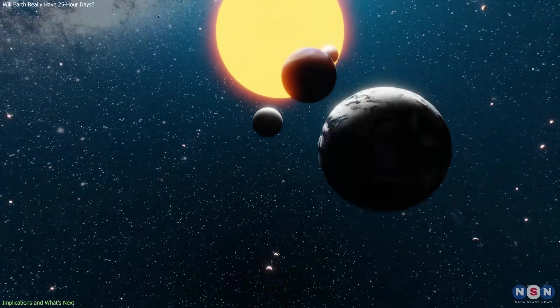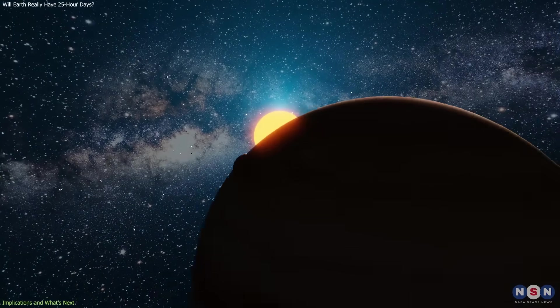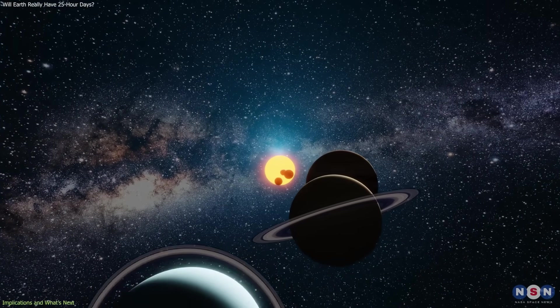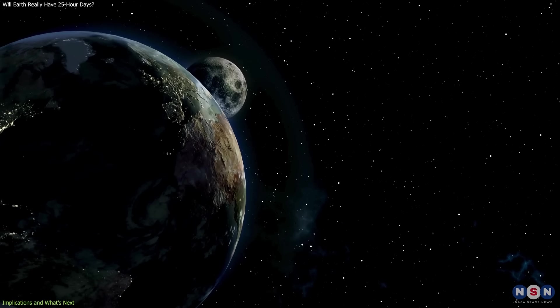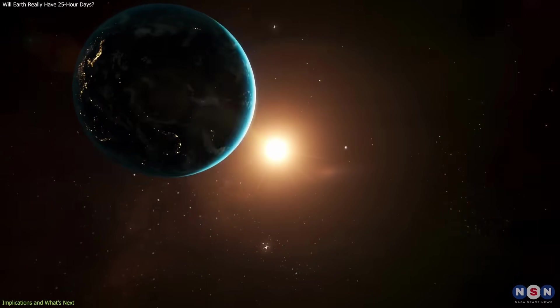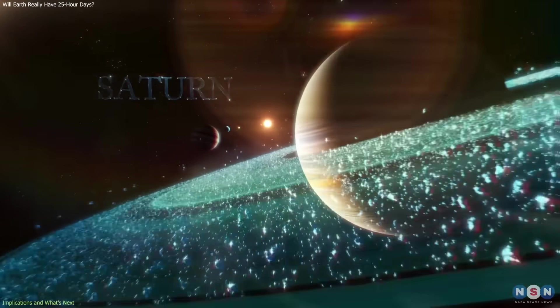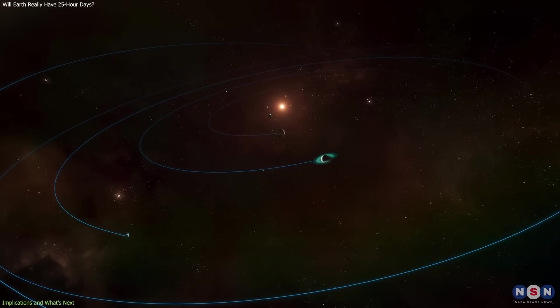There is also broader significance beyond Earth. Many planets and moons show evidence of rotational evolution, including tidal locking and extreme spin changes. Earth provides a uniquely detailed case study, allowing scientists to test theories that apply across the solar system and beyond.